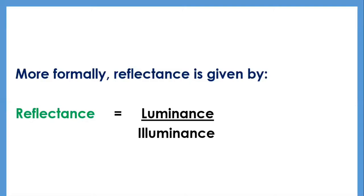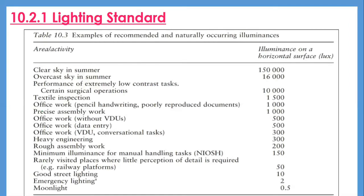If we know the illuminance of surfaces in a room — by measuring it with a light meter — we can select materials of appropriate reflectances to achieve a balance of surface luminances and ensure the ratio of luminances of adjoining surfaces is not exceeded. Table 10.3 presents recommended illuminances for different work situations, with some extreme values included for context. Standards differ from country to country.